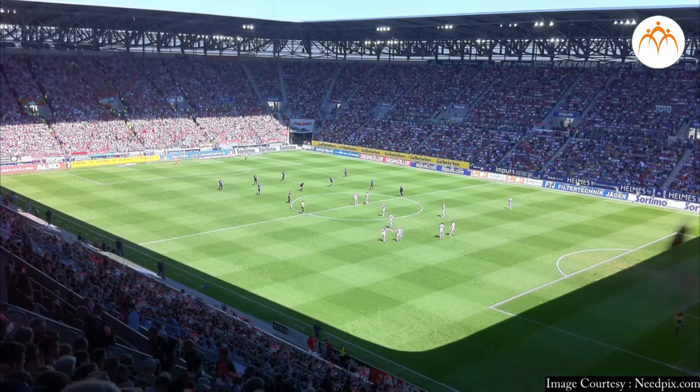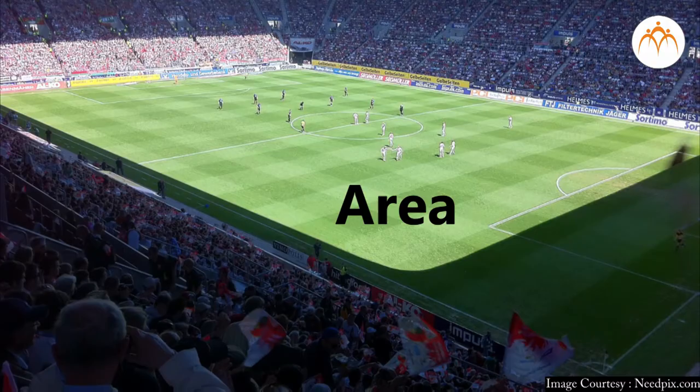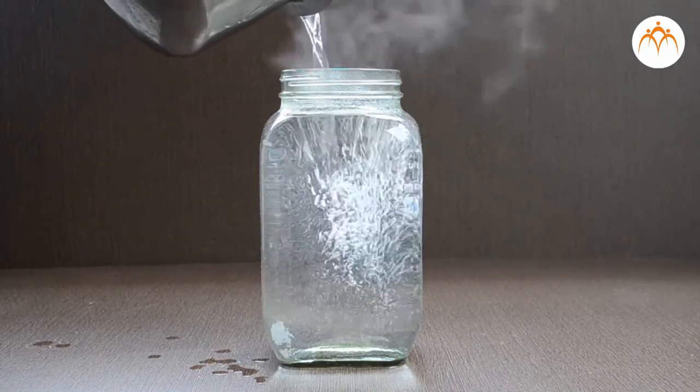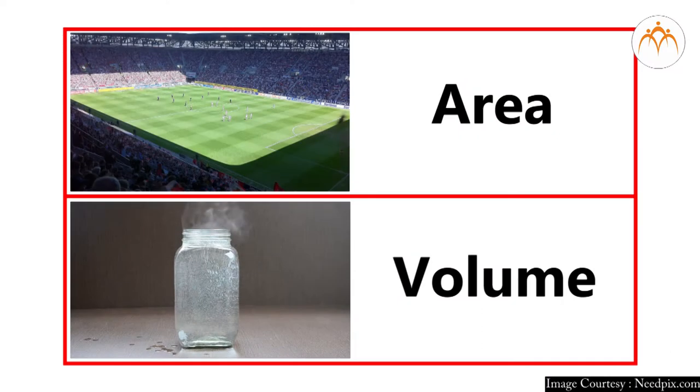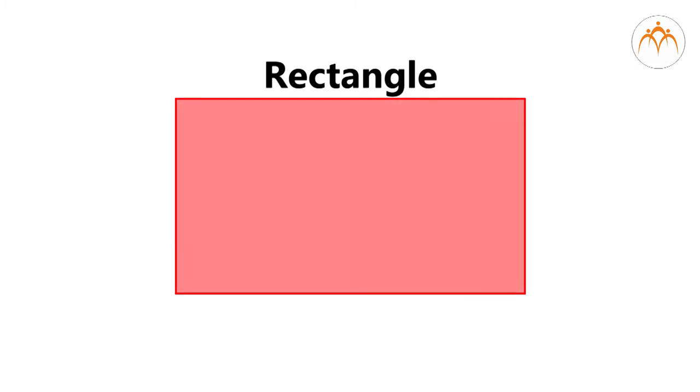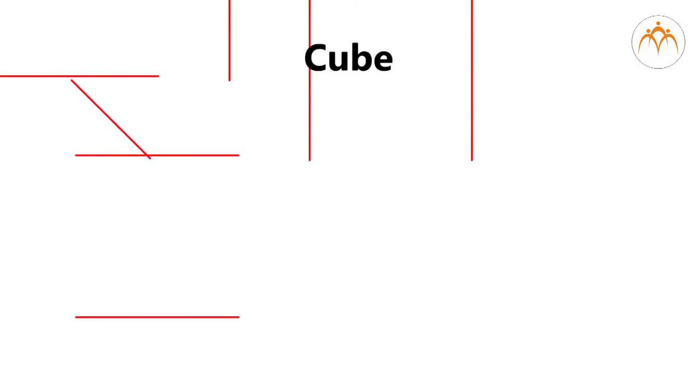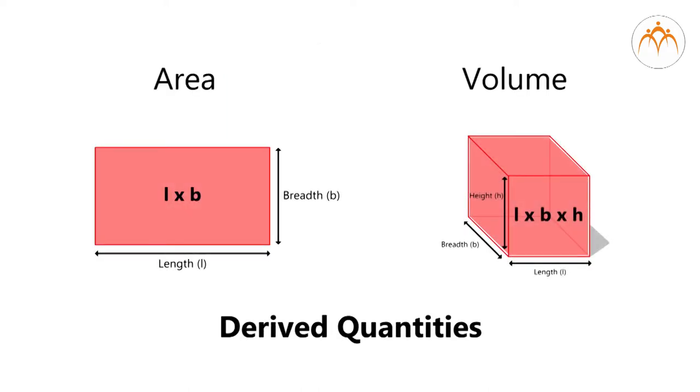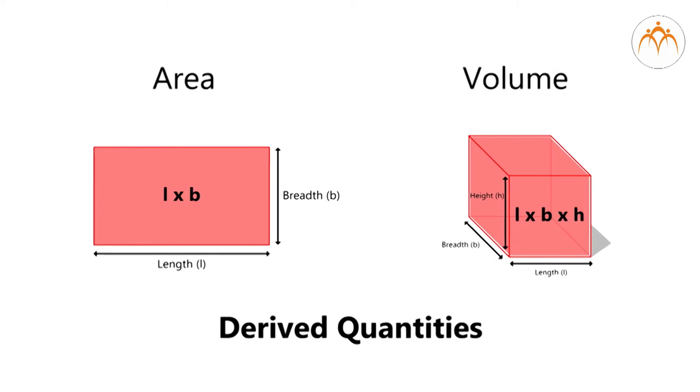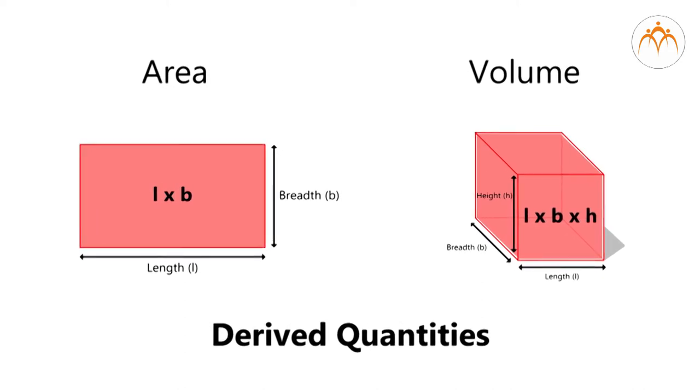We measure football ground by area and amount of water this container has by volume. These are based on a basic physical quantity, length. Area of a rectangle is measured as length multiplied by breadth, while volume of the cube is calculated as length multiplied by breadth multiplied by height. Area and volume are derived quantities. They are calculated from basic physical quantity, length.